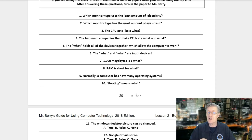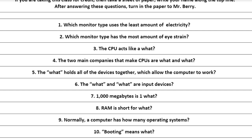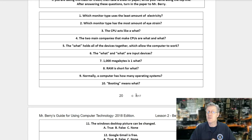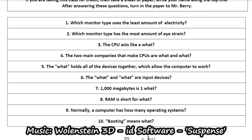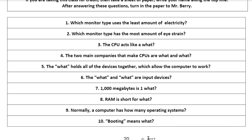Question number two: which monitor type has the most amount of eye strain? Question number three: the CPU acts like a what? Question number four: the two main companies that make CPUs are what and what? Question number five: the what holds all of the devices together which allow the computer to work?